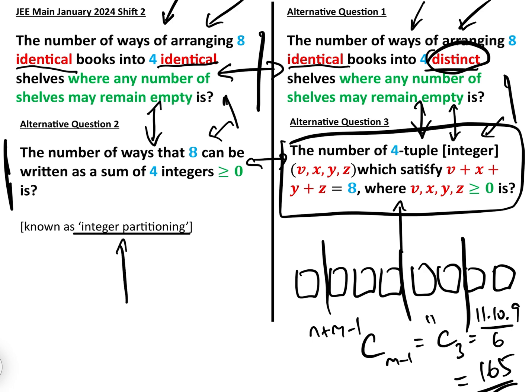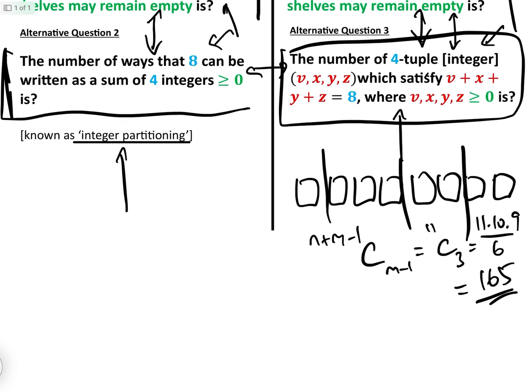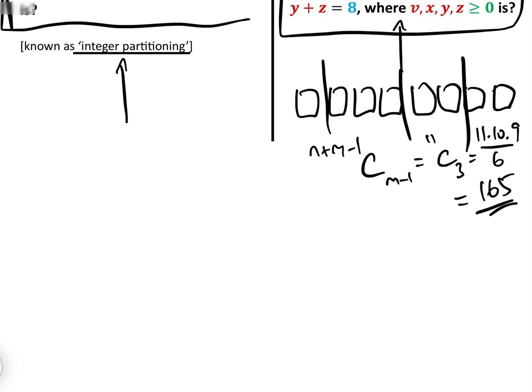Well, actually, all we've got to do is list the different ways of arranging eight identical books into four identical shelves, or alternatively, with the alternate question, the number of ways that we can write eight as a sum of four integers greater than or equal to zero. So what we're going to do is we start off by looking at...